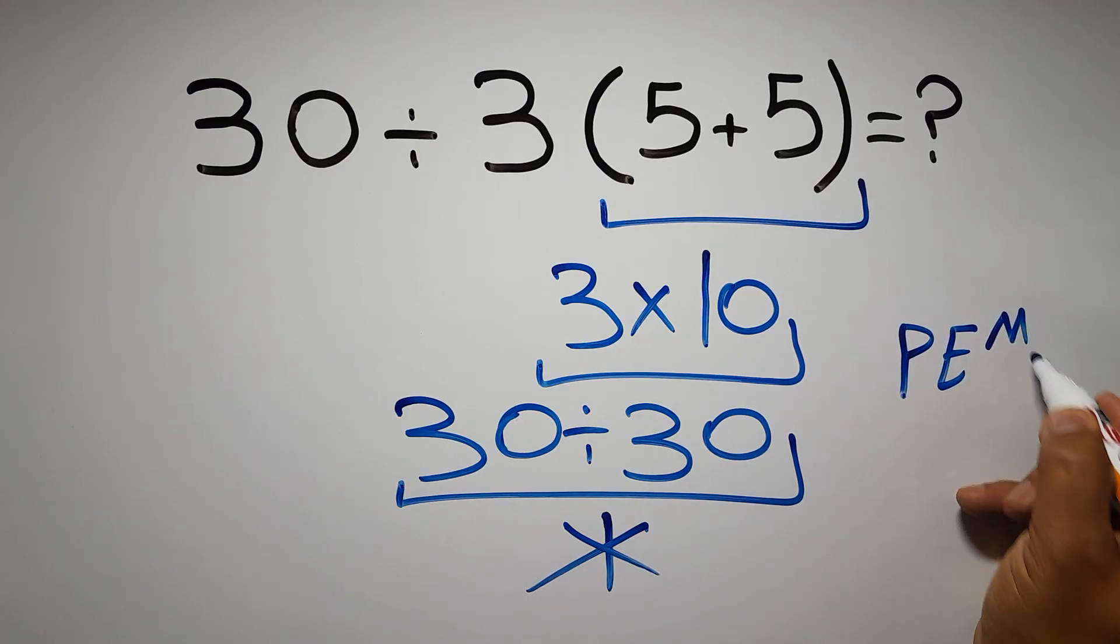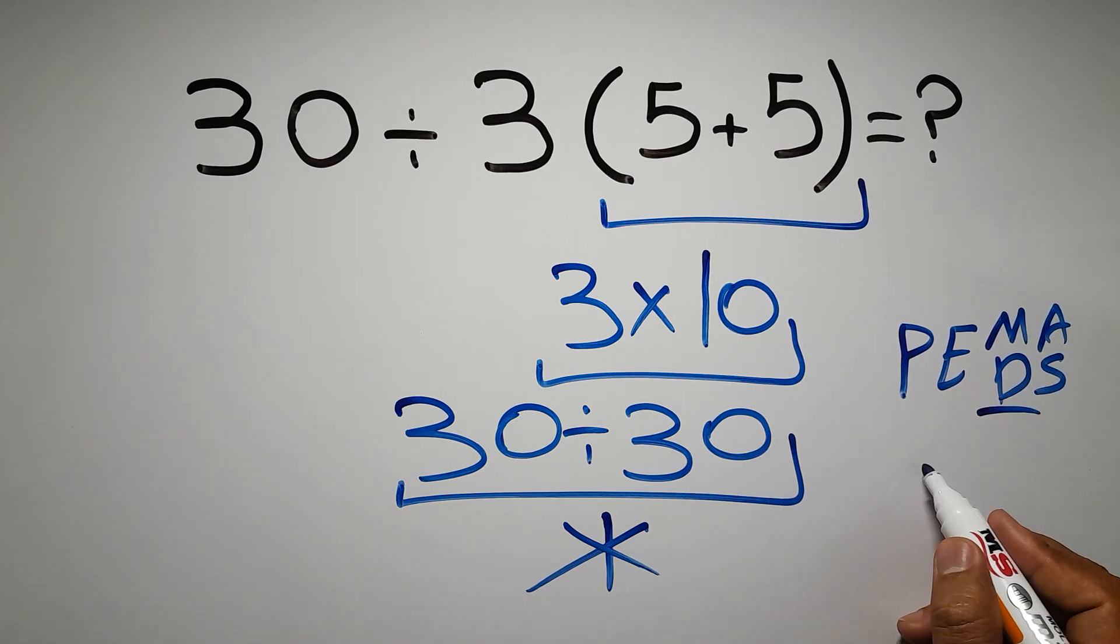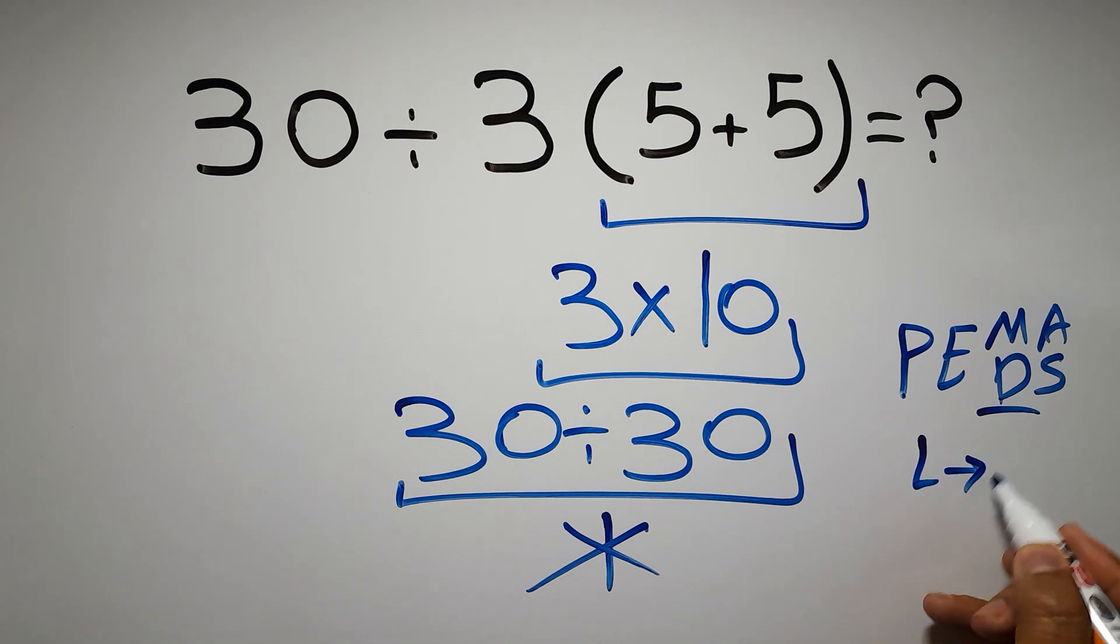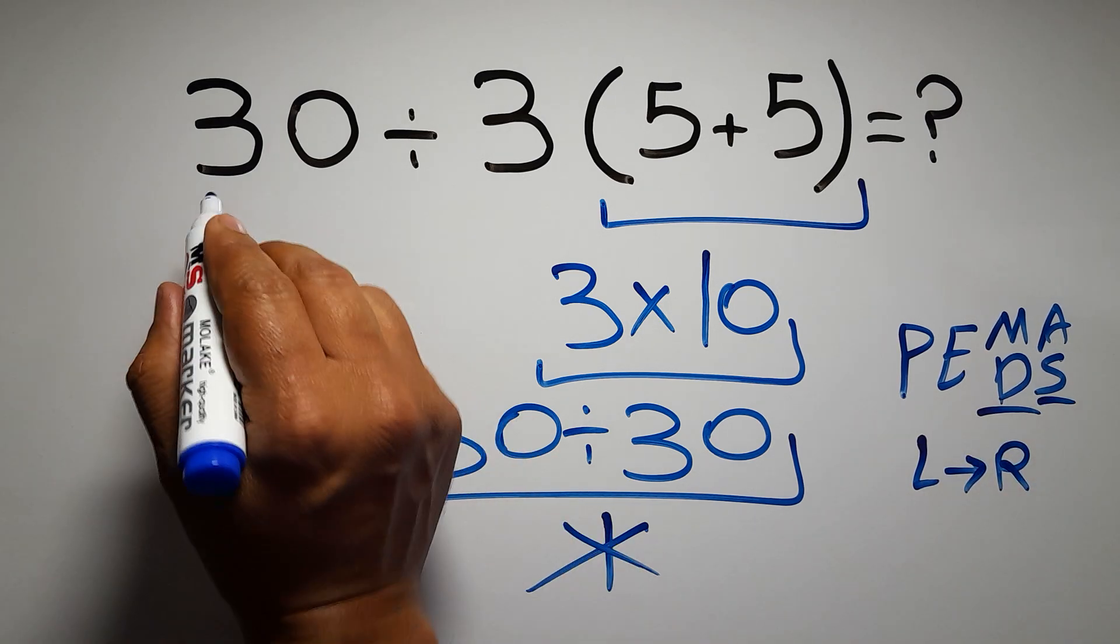Then exponents, then multiplication or division, and finally addition or subtraction. Remember that multiplication and division have equal priority and we have to work from left to right, and the same applies to addition and subtraction.